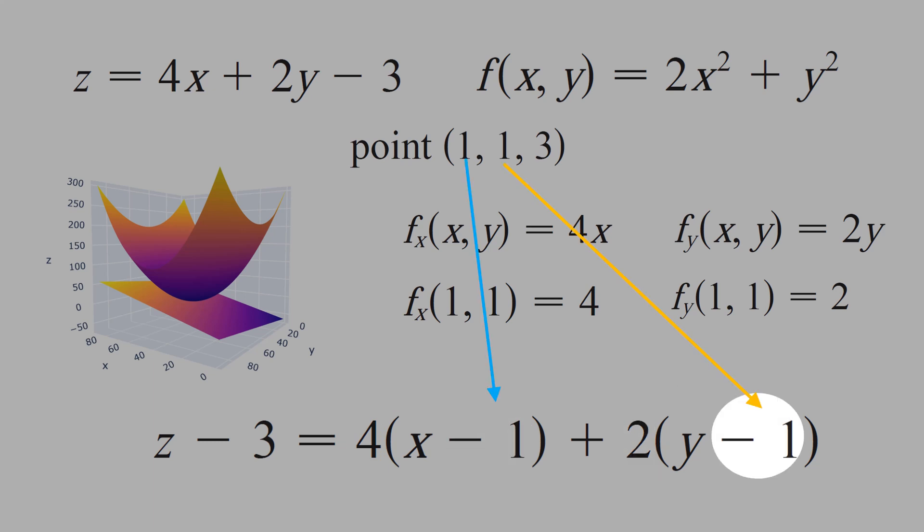And the minus 1 and minus 1 here are the points 1 and 1, and the minus 3 is the other point. If you rearrange this equation here, we get exactly this equation of the plane.